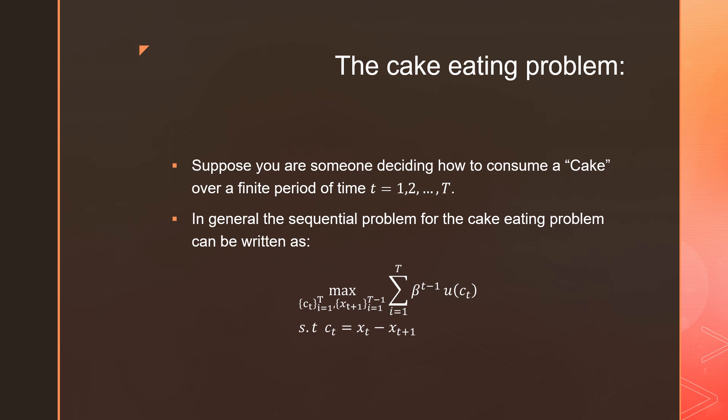This is subject to the consumption constraint, which we can substitute in. That's going to be equal to your cake size in period T minus the cake size in period T+1.